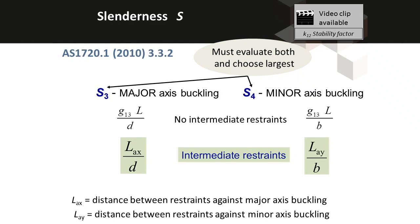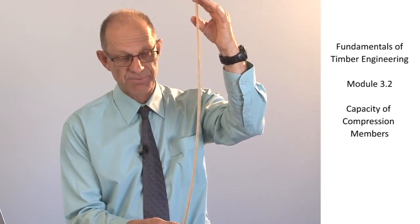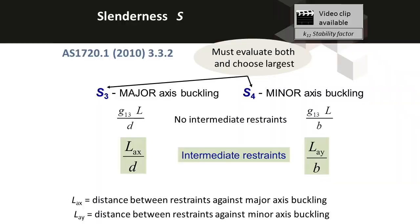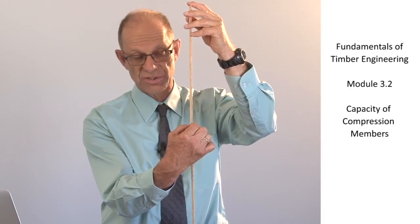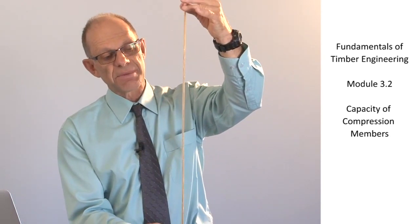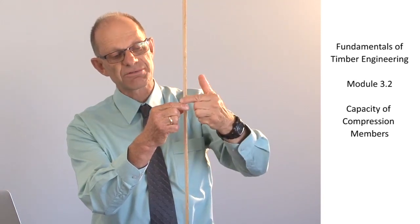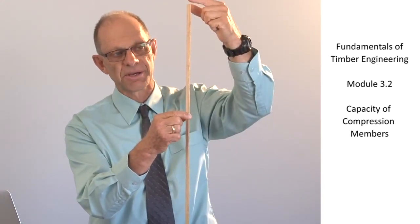The most important element in the calculation of the k12 factor is the slenderness of the compression member. For buckling in its minor axis, the minor axis slenderness is the length of the member divided by the breadth — the thinner cross-sectional dimension of the member. If the member has a lateral restraint, it's the distance between the loading point and the lateral restraint that is the buckling length of the member.